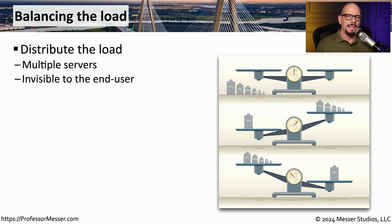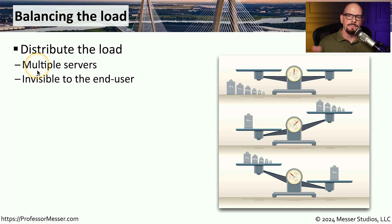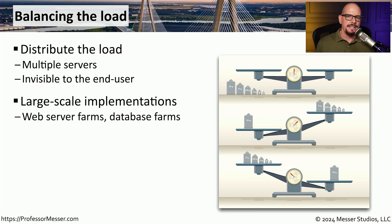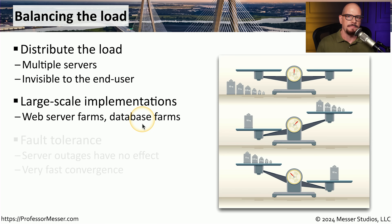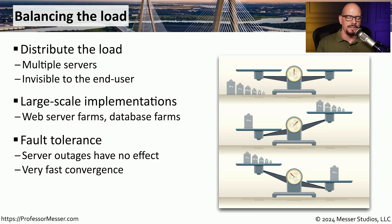If you've ever used a website that may be accessed by millions of people every day, you may be wondering how that site is able to remain up and running without any downtime. In most cases, it's because that site is using a load balancer to distribute that load across multiple physical servers. As the end user, you may have no idea that this load balancing is taking place. But if you were to look at the data center, you might find a large number of web servers or database servers in farms used in conjunction with this load balancer to maintain uptime and availability. Load balancers are also very good at identifying outages — if a server fails, the load balancer can take it out of rotation and continue providing access using the remaining devices.